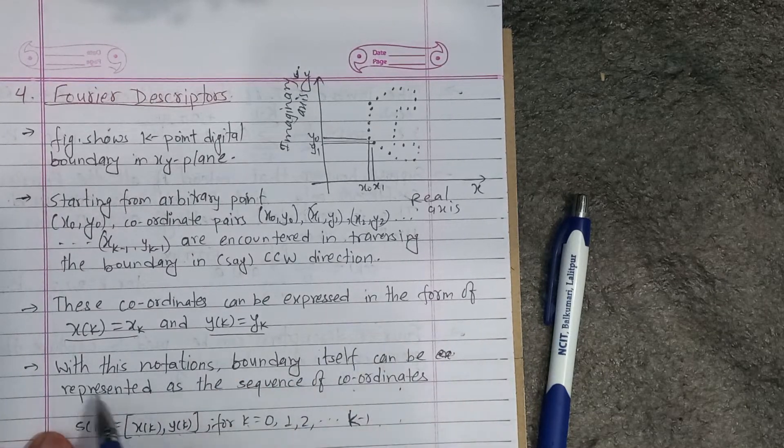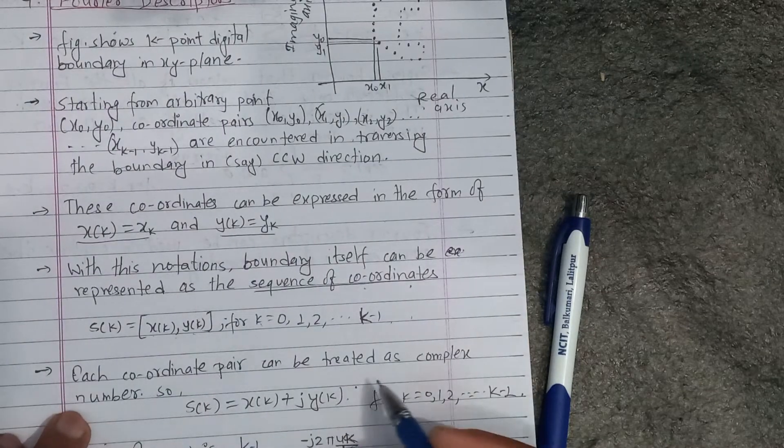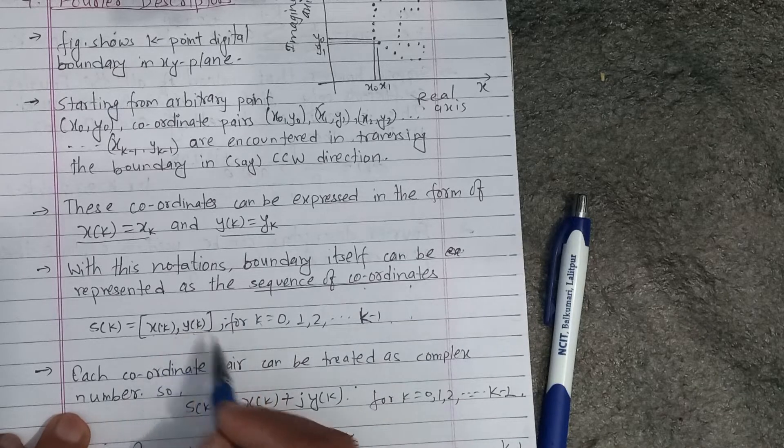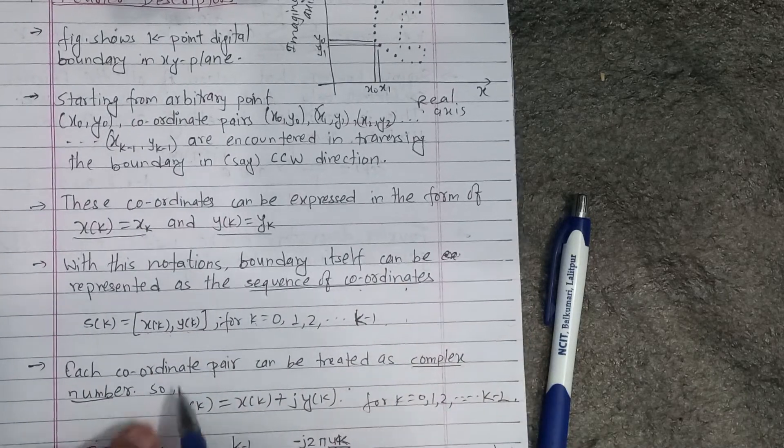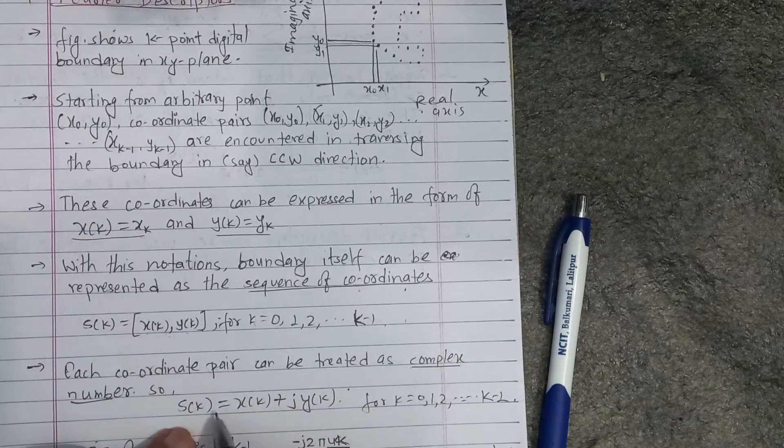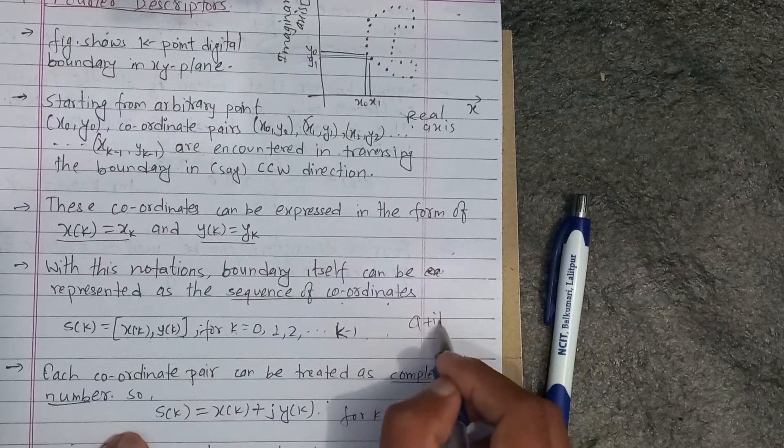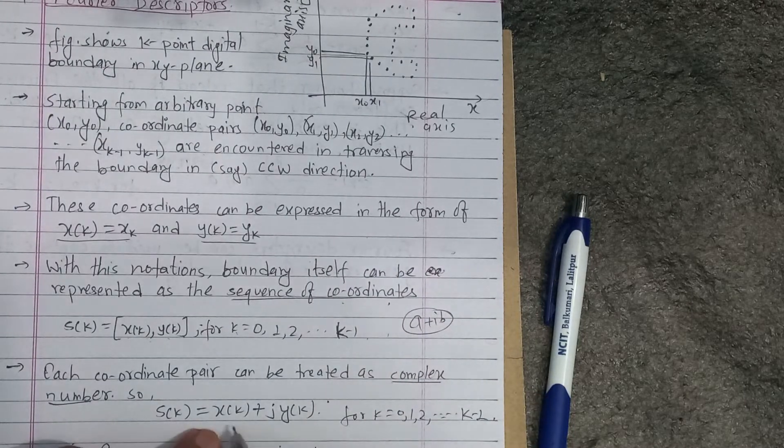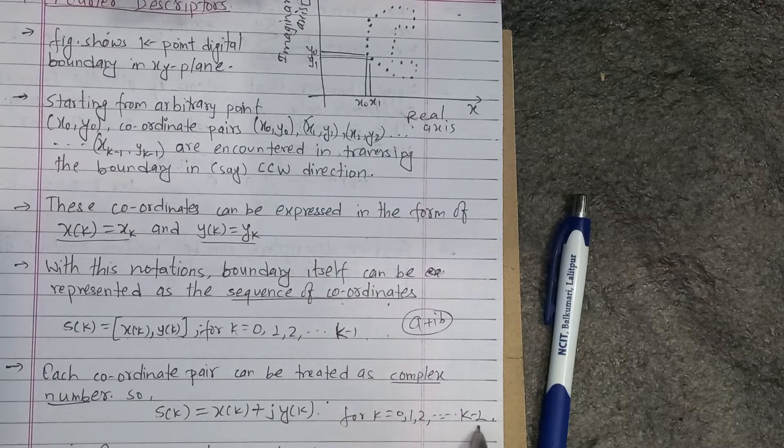Each coordinate pair can be treated as a complex number. If we have a complex number, we can treat as a complex number. This is s(k) equals to xk plus jyk. This means a plus ib, for k equals to 0 to k minus 1.